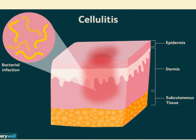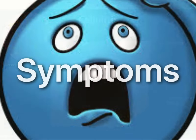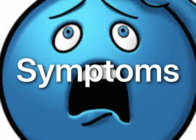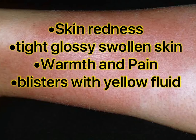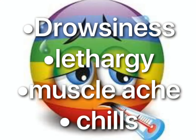Cellulitis is often caused by Staphylococcus bacteria. Symptoms of cellulitis include skin redness, tight glossy swollen skin, warmth and pain in the affected area, and sometimes blisters with yellow fluid.